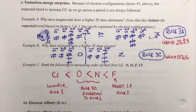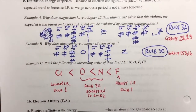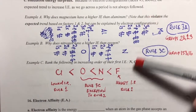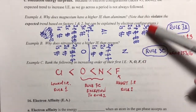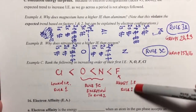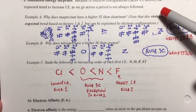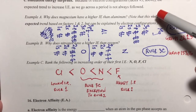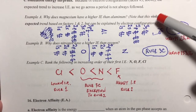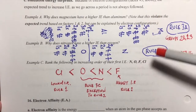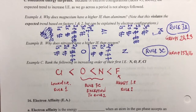So those are the exceptions to the general trend stipulated by rule two for the increase in ionization energy as you move rightward across a period.